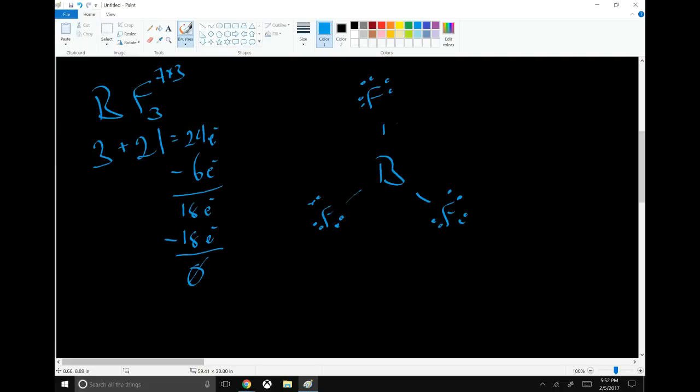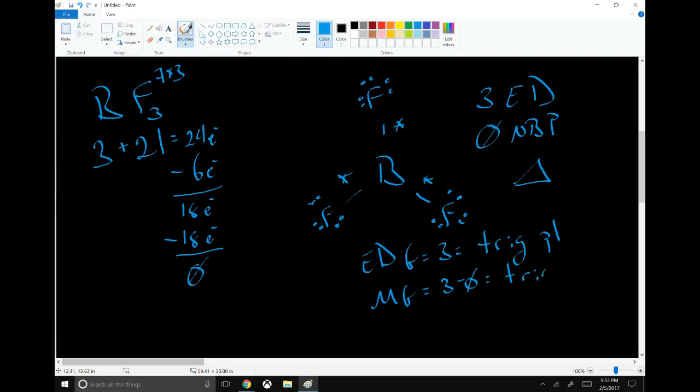So this has one, two, three electron domains and zero non-bonding pairs on boron. So its electron domain geometry is just trigonal planar. It's a flat triangle. And its molecular geometry is exactly the same. Three minus zero is trigonal planar. So when there are no non-bonding pairs, it's really very straightforward. The molecular geometry and electron domain geometry are going to be exactly the same.